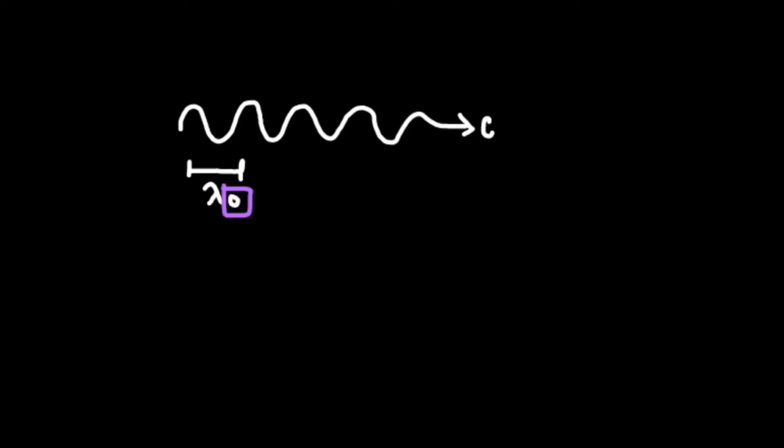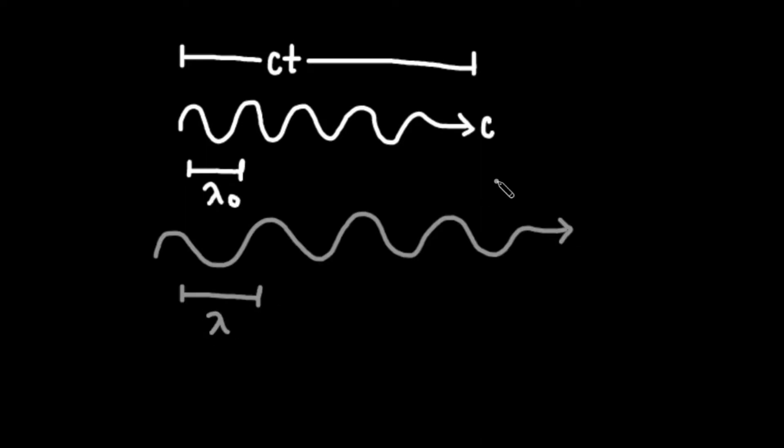The total length of the wave that travels over time t will be c times t. If the source of light moves away from us at a speed of v, the wave will appear stretched out, leaving us with an observed wavelength of lambda (λ). The additional length that was added to the wave over the same time t will be v times t, making the total length of this observed wave ct plus vt.